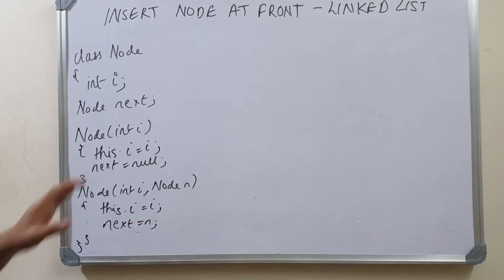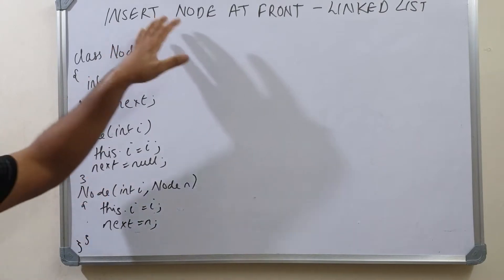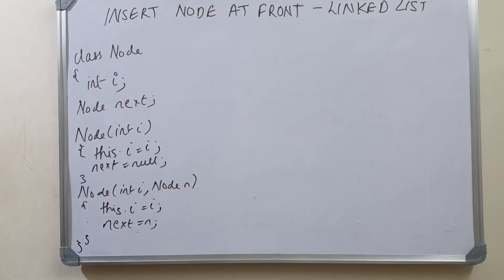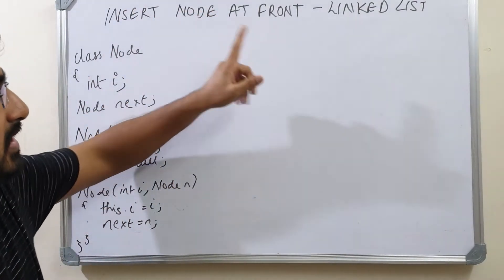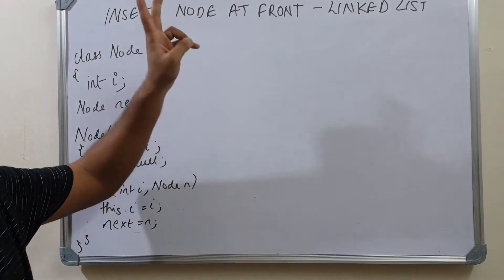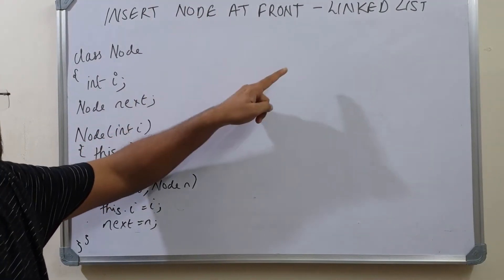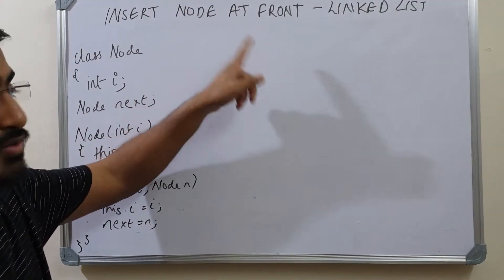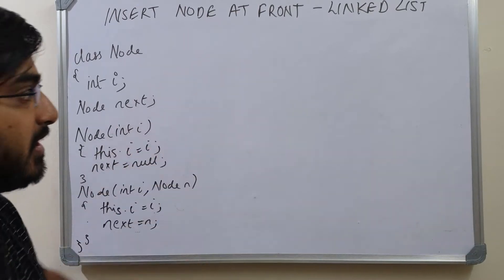We will use the constructor in the code where we insert a new node at the front of the linked list. We are going to write a function that takes the head of the linked list, the value to be inserted, creates a new node, adds it to the front of the linked list, and returns the updated head.